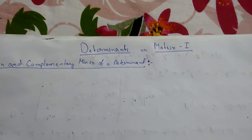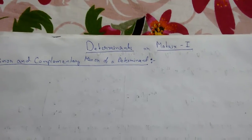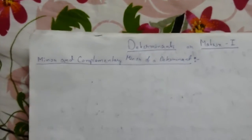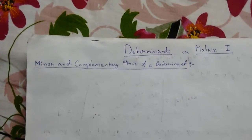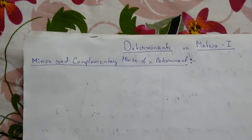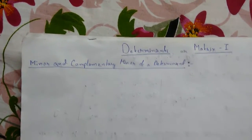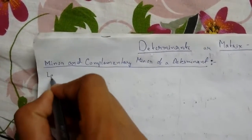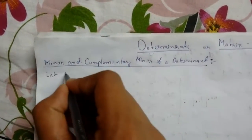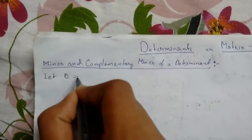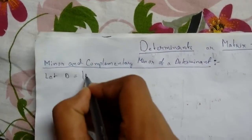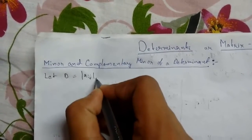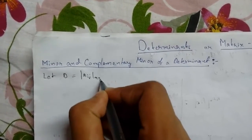Welcome back guys, today we will be learning about determinants — specifically about minor and complementary minor of a determinant. Let D be a determinant of a_ij elements having order n cross n.